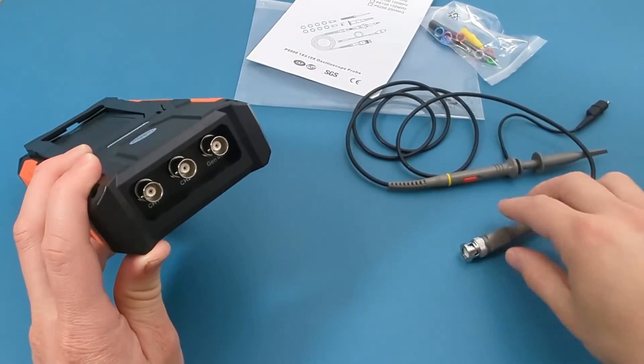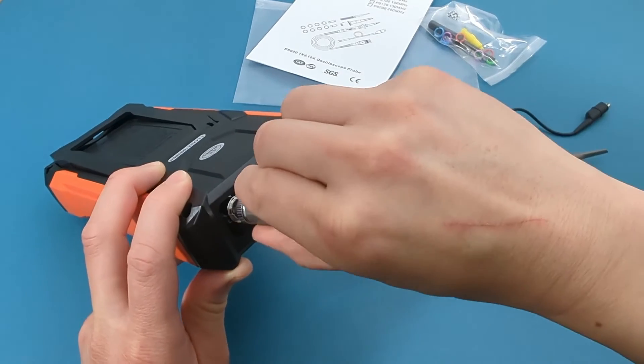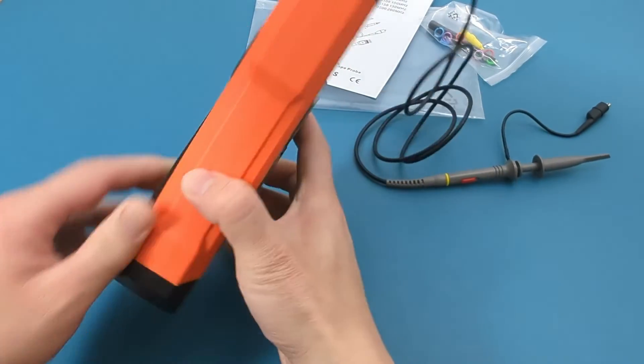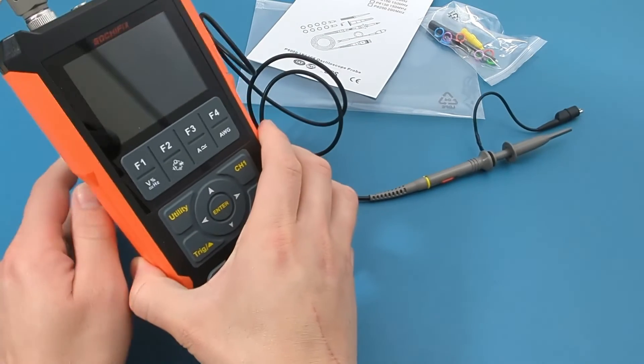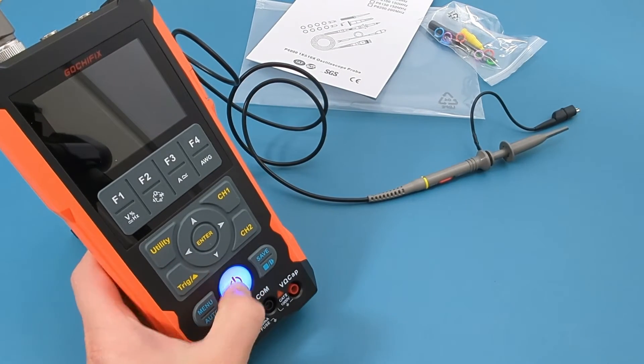Now let's switch to using the oscilloscope. Insert the connector of the high voltage probe into channel one. Take out the kickstand on the back of the oscilloscope. Hold the power button for two seconds to turn it on.